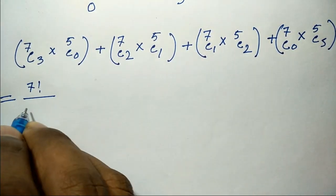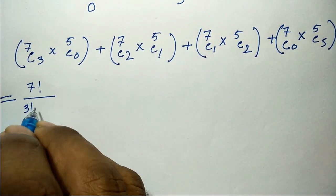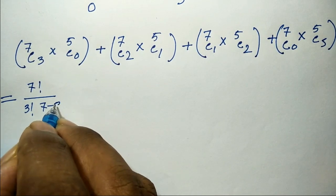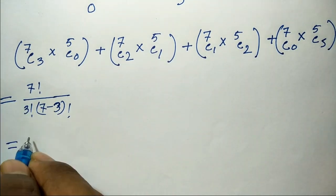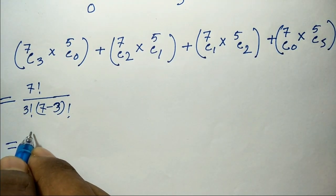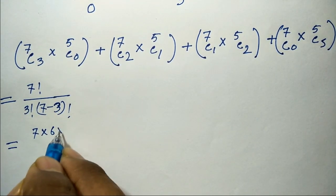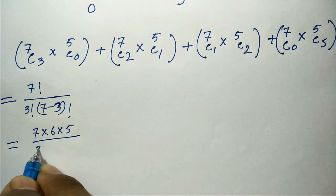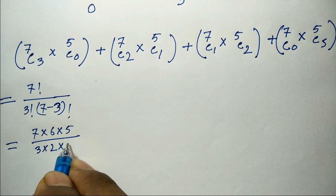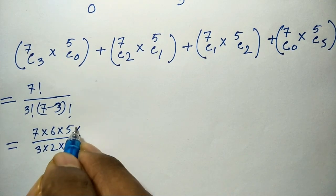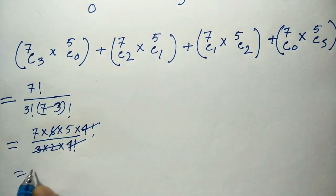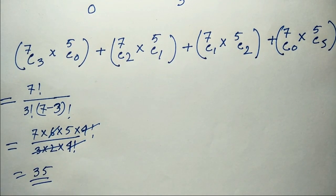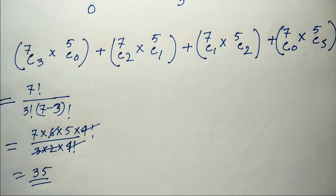Using factorial formula: 7 factorial divided by 3 factorial times 7 minus 3 factorial. Calculation: 7 into 6 into 5, divided by 3 into 2. Then 4 factorial divided by 4 factorial, and 5 minus 3 factorial. Total calculation gives the number of committees.